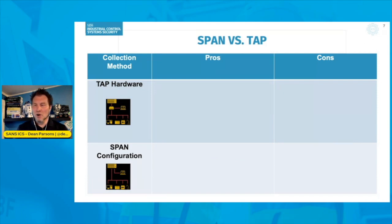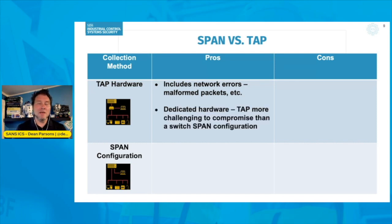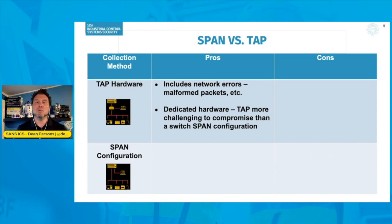Looking at TAP hardware first — the first pro is that it will include network errors or malformed packets. Possibly malicious malformed packets will be picked up by a TAP and not so much with a SPAN configuration. Another pro is that a TAP is dedicated hardware whose whole purpose is to capture and duplicate traffic to a collection device. Additionally, a TAP may be more challenging to compromise than a switch configuration on a fully managed switch, because of the nature of how it's set up.